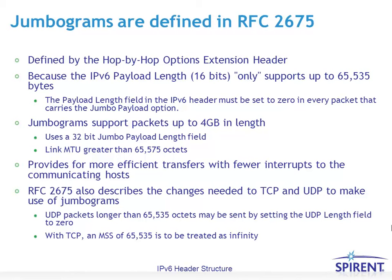One particularly interesting hop-by-hop option extension header is jumbograms, specified in RFC 2675. The IPv6 payload length is 16 bits, allowing up to 65,000 bytes in an IPv6 packet. However, if we want to send packets larger than that, the payload length in the IPv6 header is set to 0 to indicate it carries a jumbo payload option. That allows jumbograms to support up to 4 gigabytes in length because it uses a 32-bit jumbo payload length field. This provides more efficient transfer of data with fewer interrupts, allowing a host to process one larger packet rather than many smaller ones. There are also changes needed in TCP and UDP — UDP packets longer than 65,000 bytes may be sent by setting the UDP length field to 0, and with TCP an MSS of 65,000 bytes is treated as infinity.